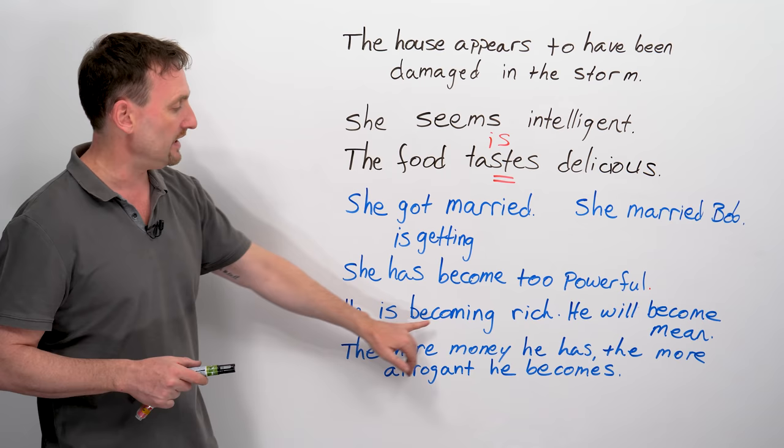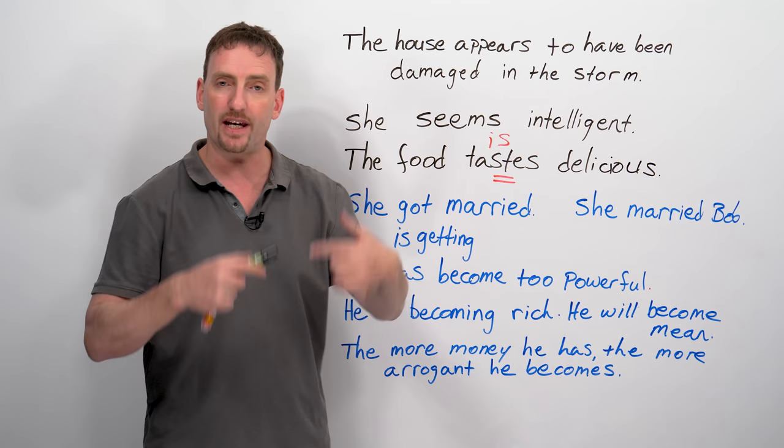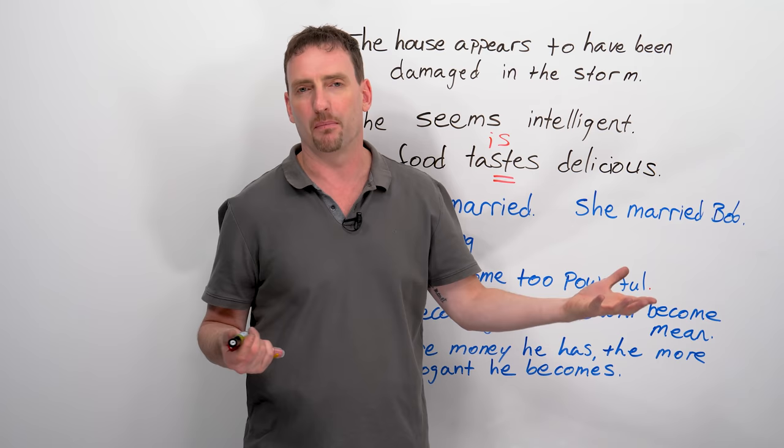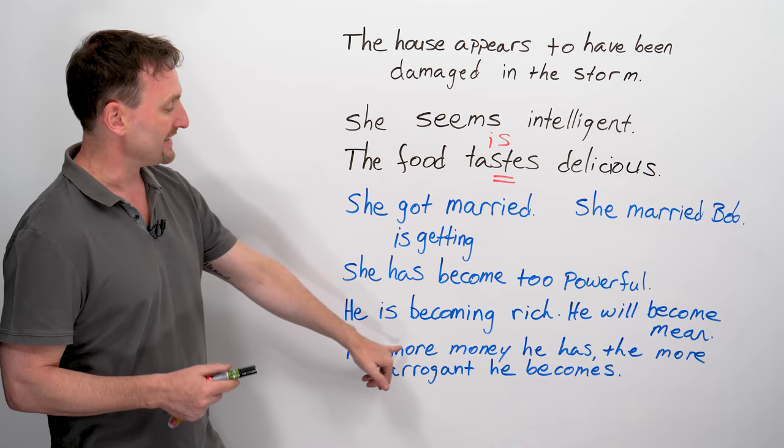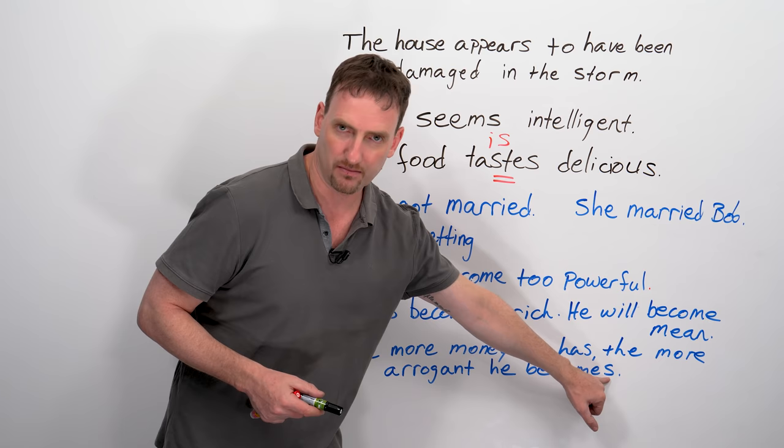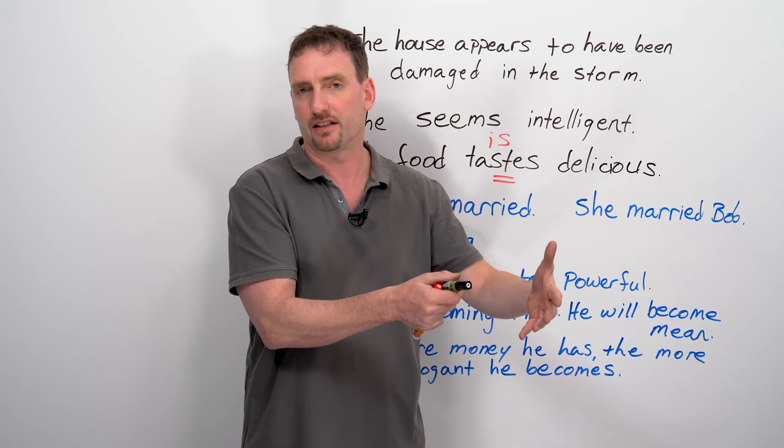She has become too powerful over time, which is why I'm using the present perfect tense, and I'm suggesting a change. I could say she is too powerful. That means it's a fact now. She was, she will be too powerful, all talking about specific situation. Has become, over the time she has been in this position. He is becoming rich. He's getting more and more money. It doesn't mean he's rich yet, but he's certainly on his way. His situation is changing. He will become mean. When he has more money, the more money he has, the more he will become mean, like a mean person, because some people become mean when they have money. Why? Because the more money he has, the more arrogant he becomes.